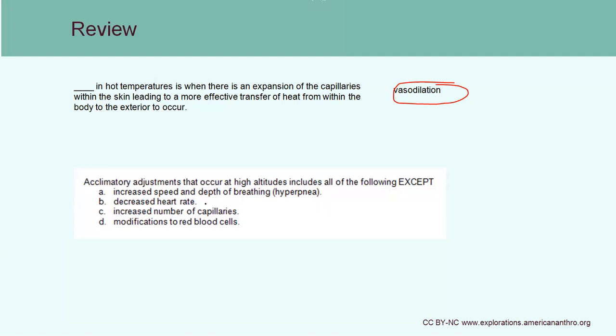Next review question: acclimatory adjustments that occur at high altitudes include all of the following except — A, increased speed and depth of breathing; B, decreased heart rate; C, increased number of capillaries; or D, modifications to red blood cells. All of these are true except for the decreased heart rate — you're more likely to see an increased heart rate.